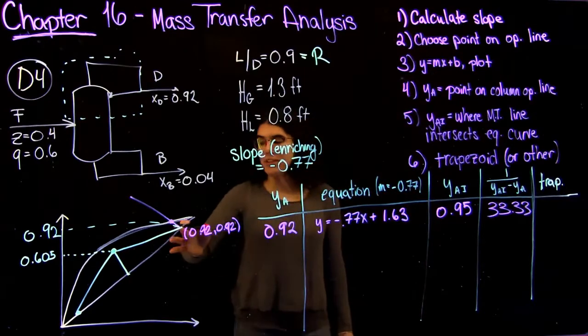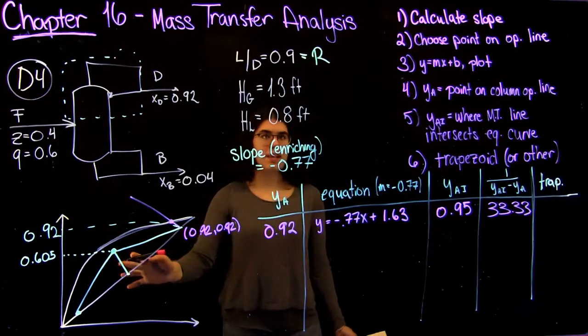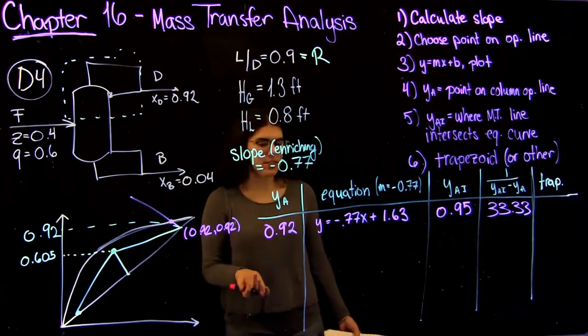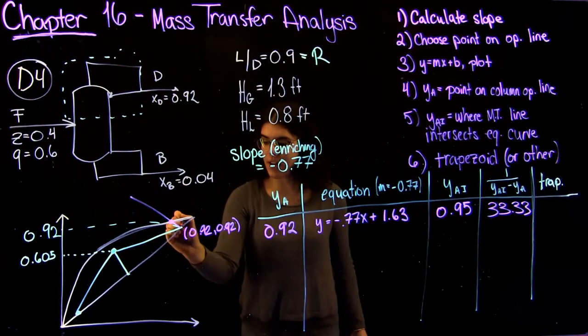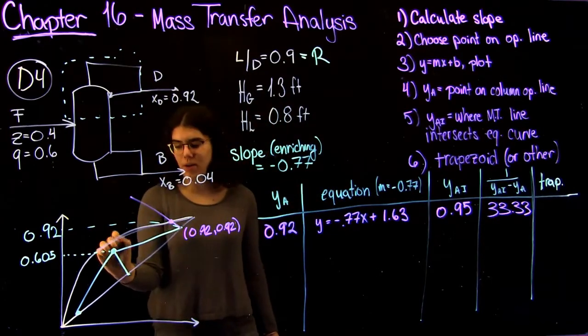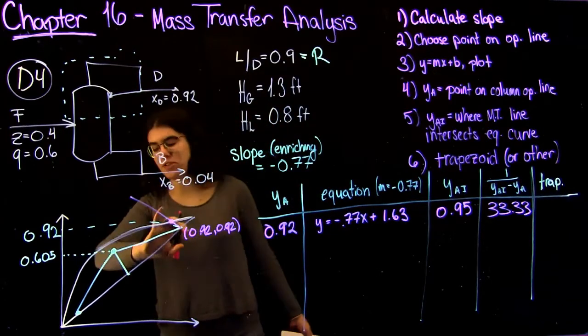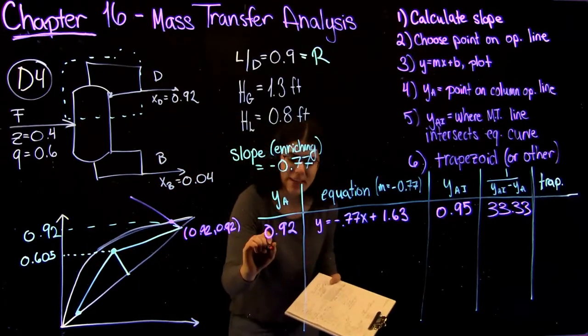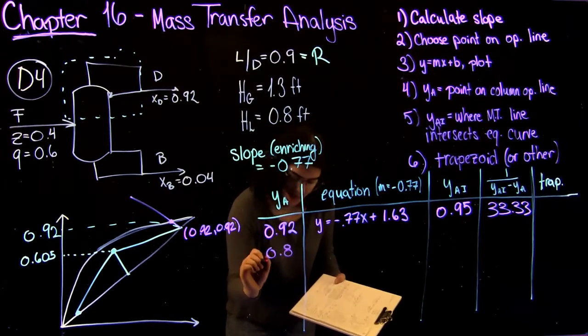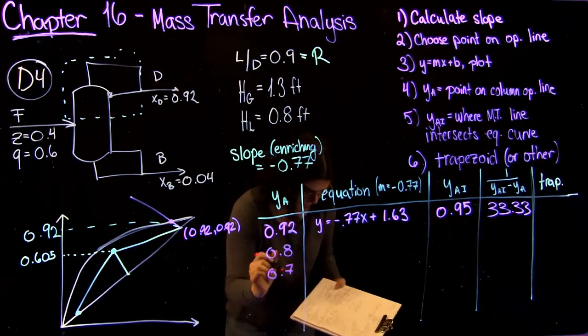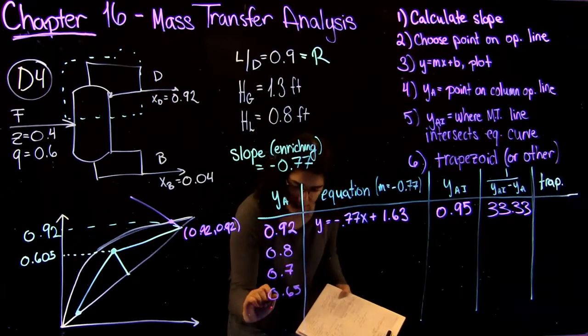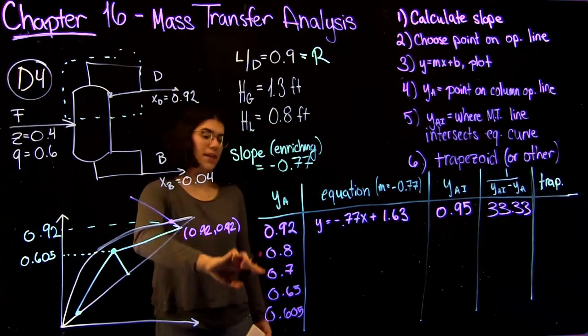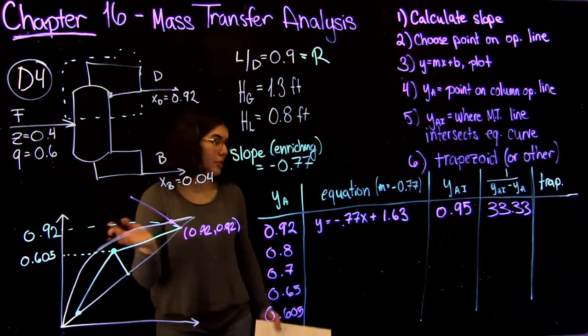You're going to want to do this for a couple points along this line. Usually four to six points is a good enough estimate to get you a good integral. I'd also suggest for sure including this point here and the point here where it intersects your feed line, that way you're sure you defined your operating line along the full region. How I did it is I did 0.92, I did 0.8, 0.7, 0.65, and 0.605. If you really wanted to be thorough, you could do it in such a way that you have even spacing, but again, totally up to you.